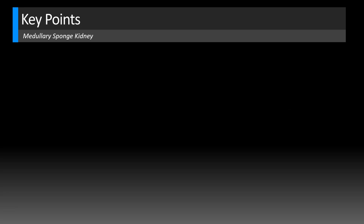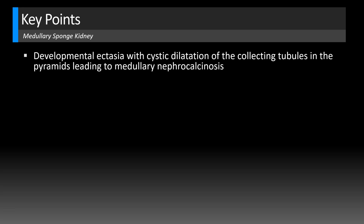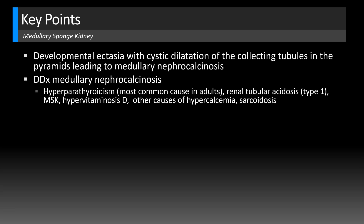Let's take a look at some key points for medullary sponge kidney. It's a developmental ectasia causing cystic dilatation of the collecting tubules in the pyramids, causing calcium deposition and medullary nephrocalcinosis. Now there's a differential for medullary nephrocalcinosis — not all cases are due to medullary sponge kidney. The most common cause in adults is hyperparathyroidism. Also renal tubular acidosis, specifically the type 1 or distal type; medullary sponge kidney; hypervitaminosis D; anything that causes hypercalcemia; and sarcoidosis, among other causes.